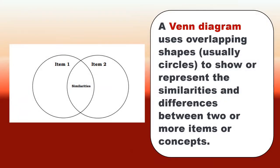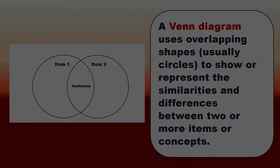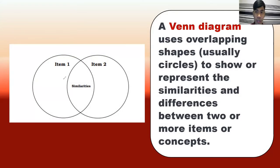A Venn diagram uses overlapping shapes, usually circles, to show or represent the similarities and differences between two or more items or concepts. In this figure, the similarities are at the center, while the differences are presented between item 1 and item 2.